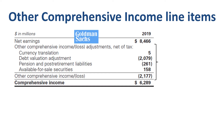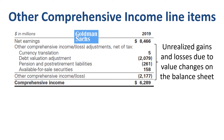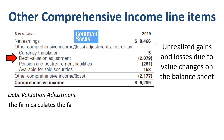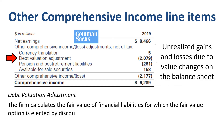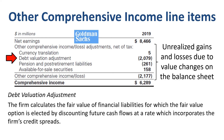Sometimes line items that are very specific to an industry show up. In the case of a financial institution like Goldman Sachs, the debt valuation adjustment tends to be the largest line item in other comprehensive income. The useful high-level starting point is found in the notes to the consolidated financial statements: the firm calculates the fair value of financial liabilities for which the fair value option is elected, by discounting future cash flows at a rate which incorporates the firm's credit spreads.